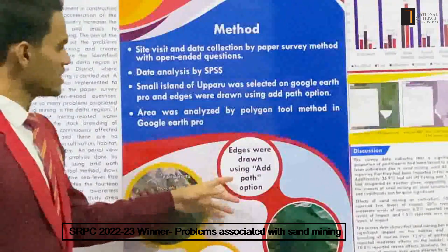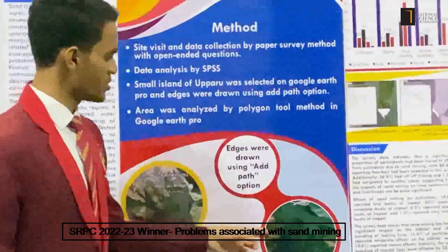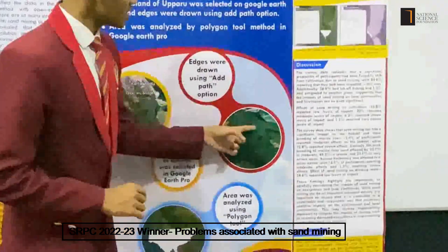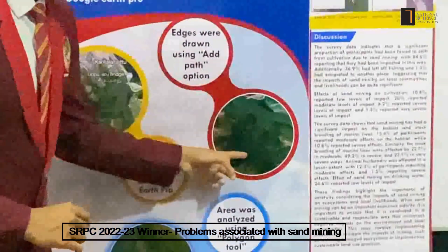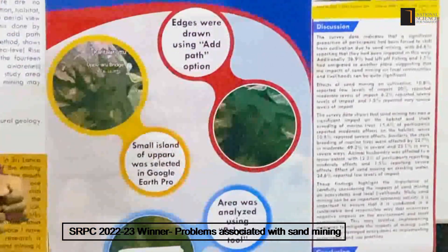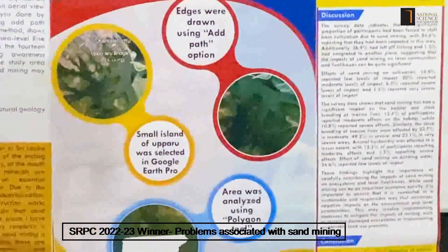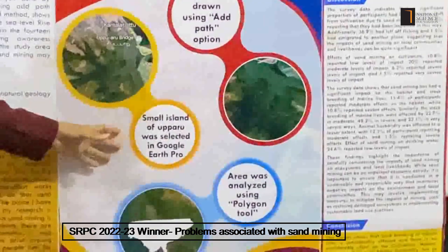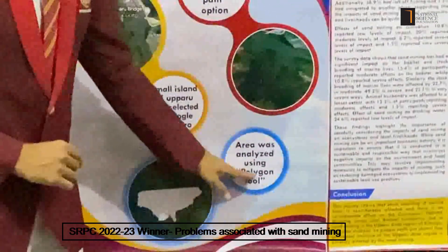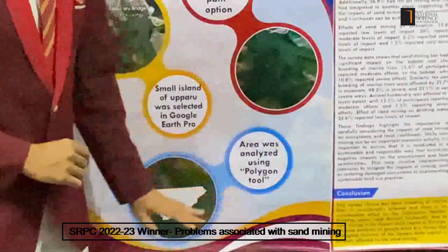In Google Earth Pro, using the edge path option, I have drawn the edges for a particular island in Upari Delta Region. Then, for the area analysis, I have used the polygon tool method.